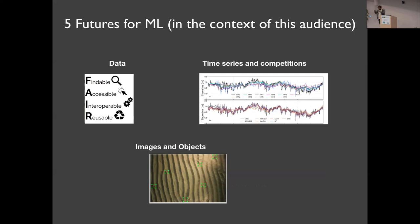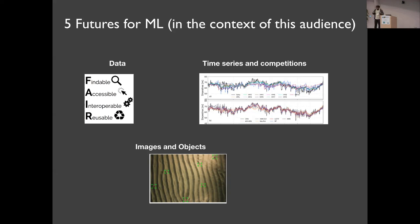That ends the presentation of the machine learning work in this hybrid approach — taking data and machine learning components, putting them inside models, and finding creative ways to deal with parameterizations. I now want to shift gears and talk about five things I'm personally excited about related to machine learning that I think might be relevant to this audience.